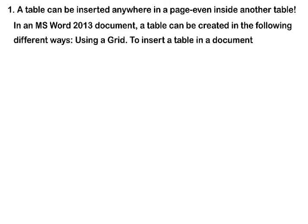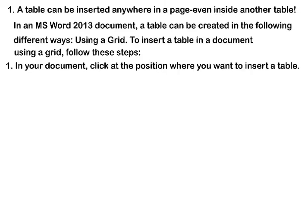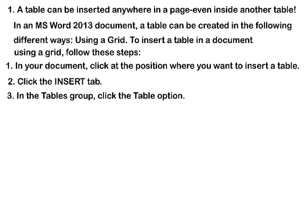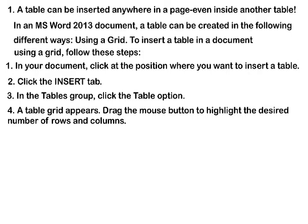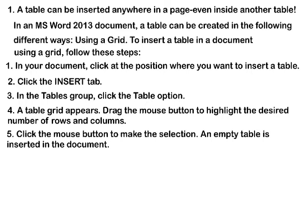Using a Grid: To insert a table in a document using a grid, follow these steps. Click at the position in your document where you want to insert a table. Click the Insert tab. In the Tables group, click the Table option. A table grid appears. Drag the mouse button to highlight the desired number of rows and columns. Click the mouse button to make the selection. An empty table is inserted in the document.